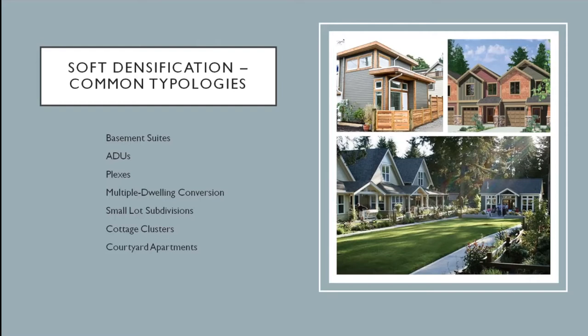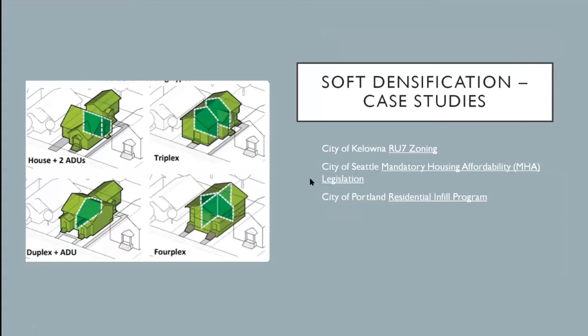That courtyard acts as a front yard facing the street. An example of a cottage cluster is shown at the bottom of this slide. For my research, I looked at three case studies of cities that have implemented soft densification infill housing strategies in existing predominantly single-family neighborhoods that already have existing infrastructure such as roads, schools, and parks.